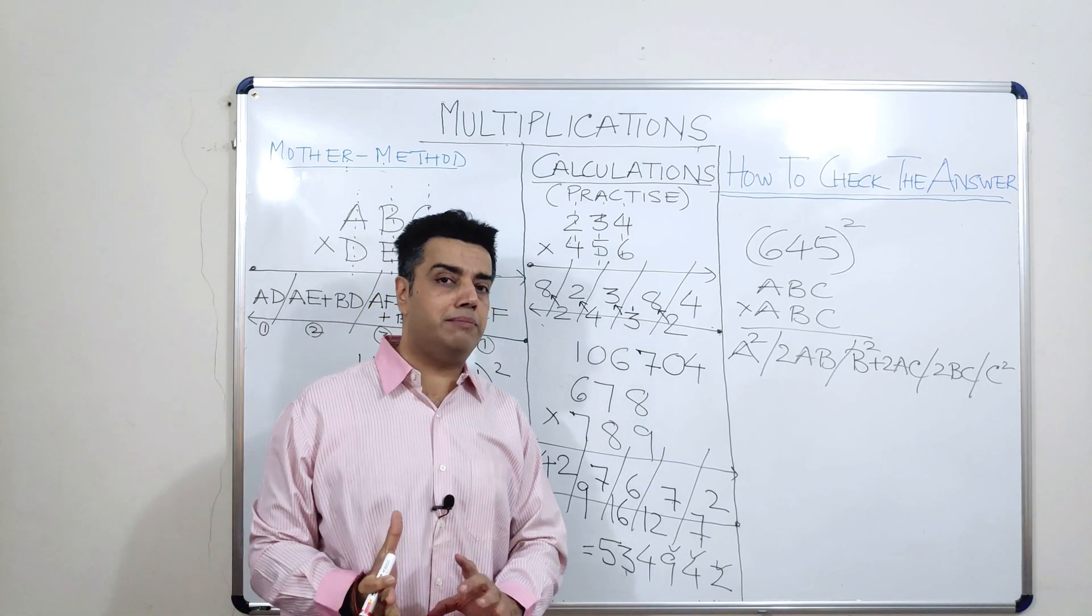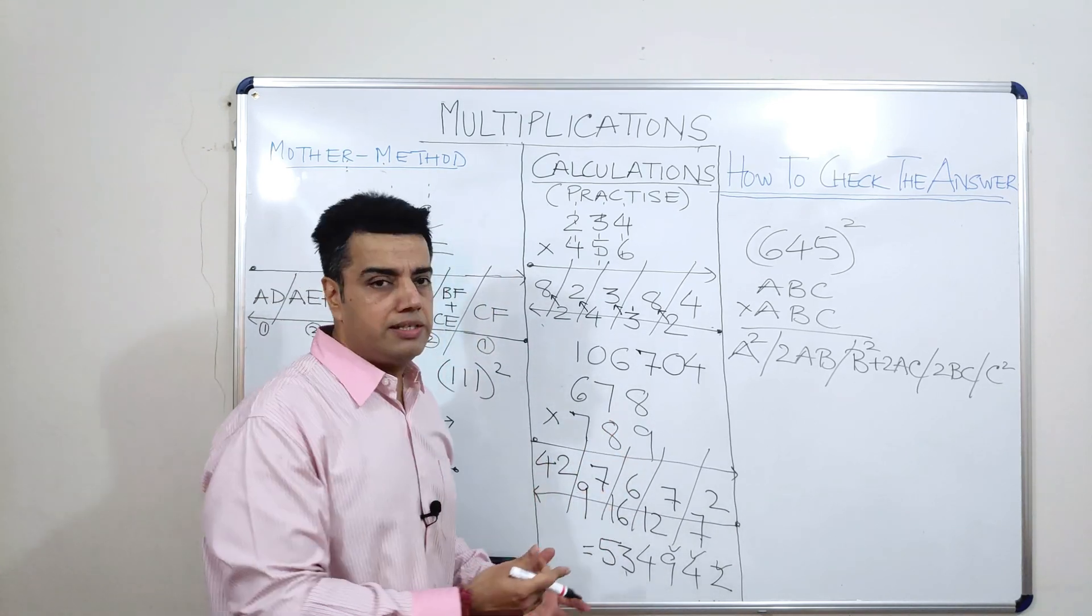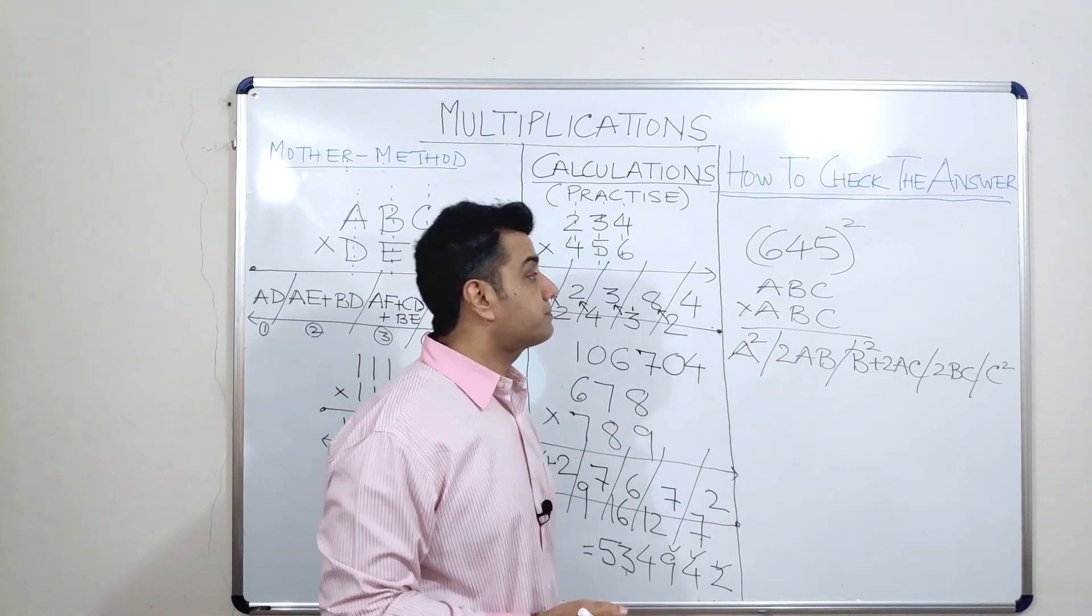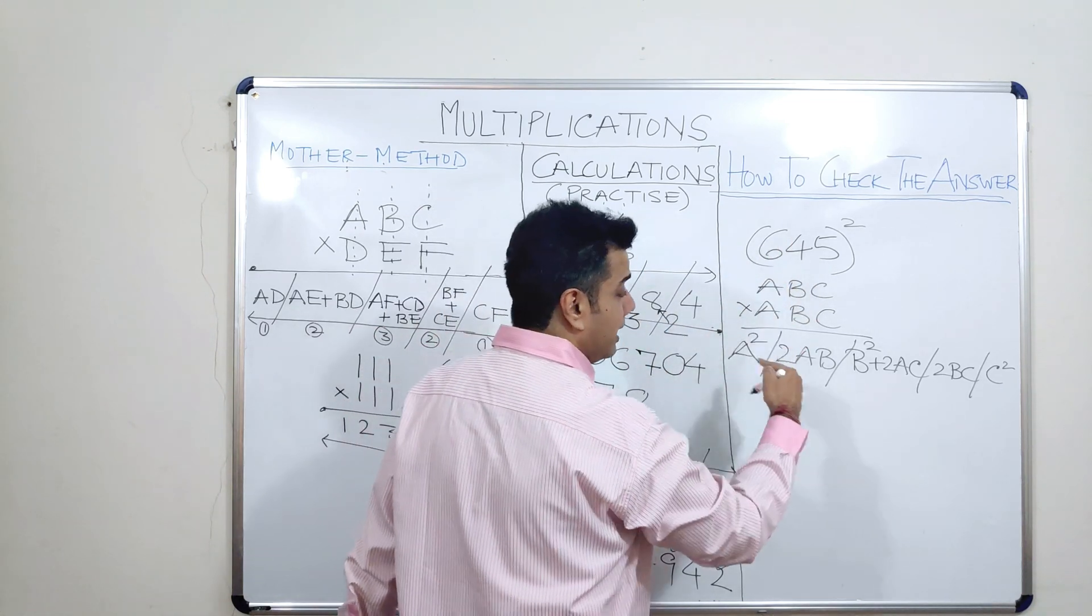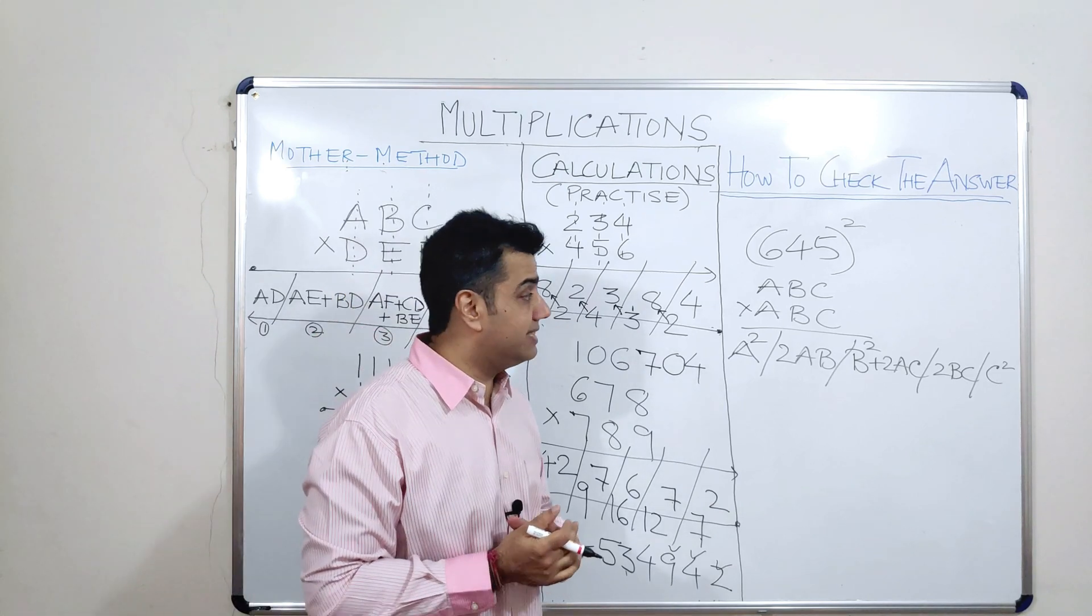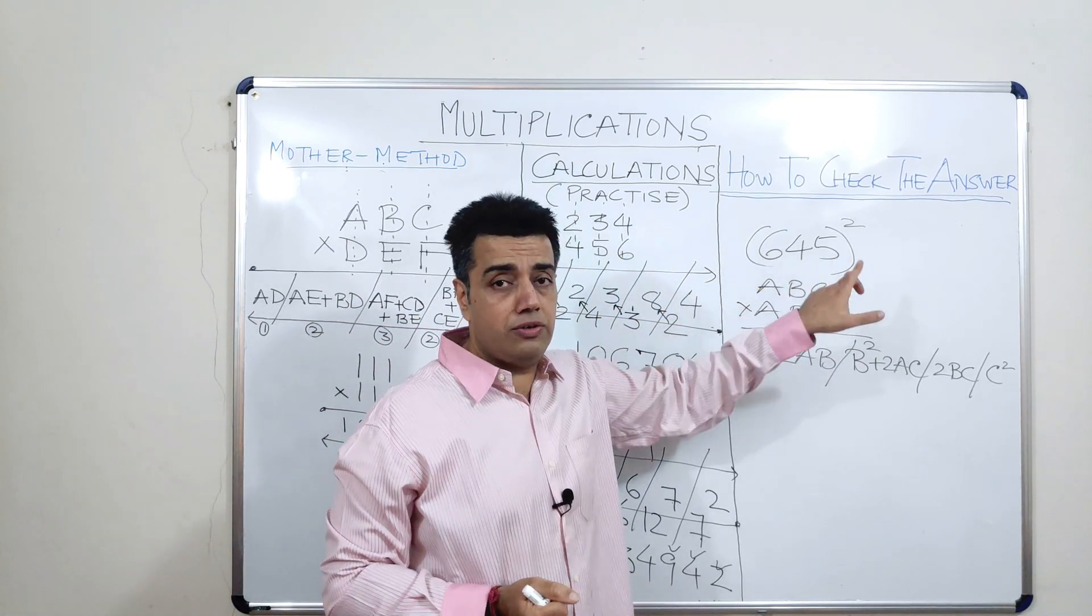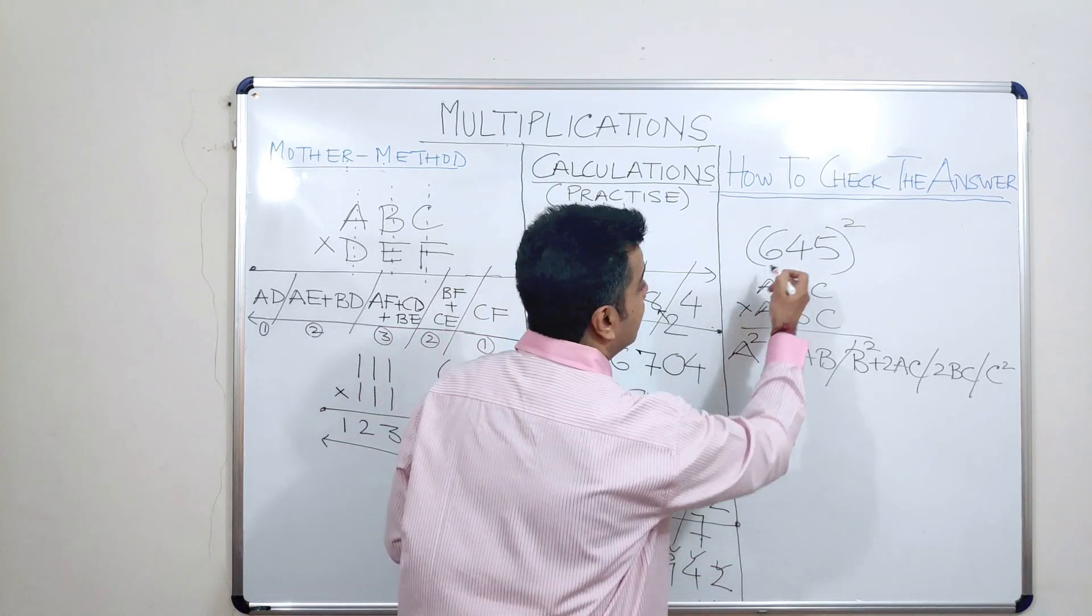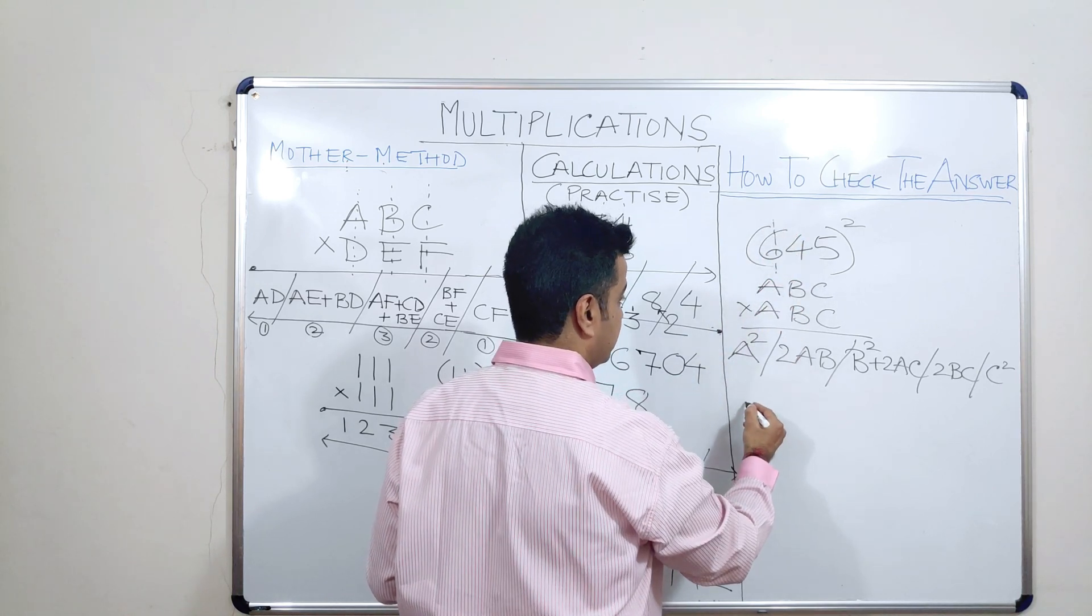Three digit squares are nothing but had I known the mother method of finding out or calculating a three digit number, multiplying a three digit number into another three digit number, I can might as well calculate the square also even if I did not know this. How? Now, please look here carefully. Now, I am subscribing to a school of thought which says I will not even write it in this manner. I could have written 645 into 645. But what am I going to do here? I will just take, imagine that I have taken only one digit. One digit means what? 6 into 6.